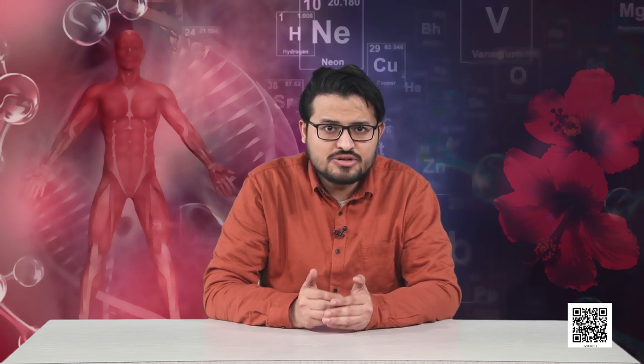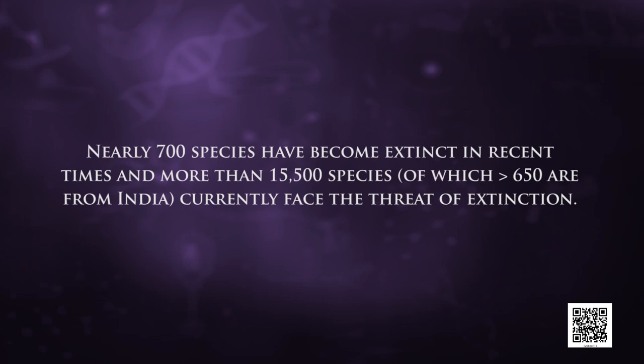To summarize: communities with high diversity tend to be less variable, more productive, and more resistant to biological invasions. Earth's fossil history reveals mass extinctions in the past, but present extinction rates — largely attributed to human activities — are 100 to 1,000 times higher. Nearly 784 species have become extinct in recent times and more than 15,500 species, of which 650 are from India, currently face the threat of extinction. The causes include habitat loss and fragmentation, over-exploitation, biological invasion, and co-extinctions. In the next module we will explore how and why we can conserve biodiversity.